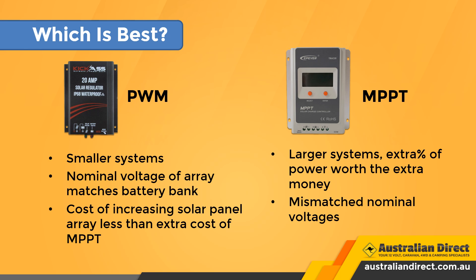An MPPT is worth it if you have a larger system that can benefit from the extra percentage of power. For instance, if you have a 2000-watt array and you can increase the output by 25% with MPPT, that's like adding another 500 watts of solar panels. At approximately $1 a watt, that's $500 just for the panels, not to mention the extra wires and racking needed — so it's probably cheaper to buy an MPPT charge controller. An MPPT charge controller is also required when the voltage of the array doesn't match the battery bank voltage. Another great reason is when the space that solar panels take up needs to be kept to a minimum but the user wants to extract the absolute maximum charge — for example, portable solar kits for camping.